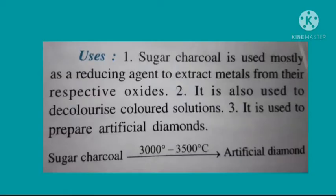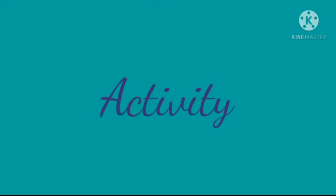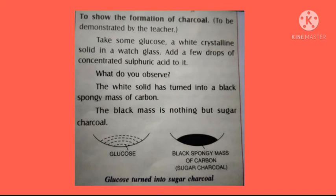Uses of sugar charcoal: it is used mostly as a reducing agent; it is used to decolorize colored solutions; and it is used to prepare artificial diamonds. Activity to show the formation of charcoal: take some glucose, a white crystalline solid, in a watch glass and add a few drops of concentrated sulfuric acid. The white solid turns into a black spongy mass of carbon — this black mass is the sugar charcoal.